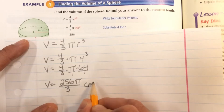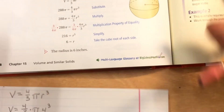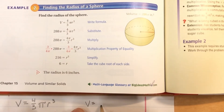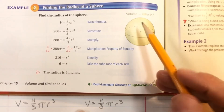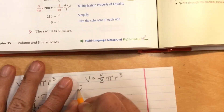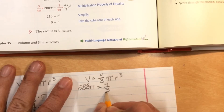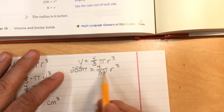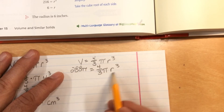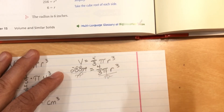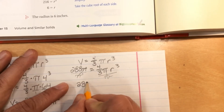For the next example, they're looking for the radius. We start with volume equals four-thirds pi r cubed. The volume is given as 288 pi, so 288 pi equals four-thirds pi r cubed. The first thing we can do is divide both sides by pi, since pi cancels from both sides, leaving 288 equals four-thirds r cubed.